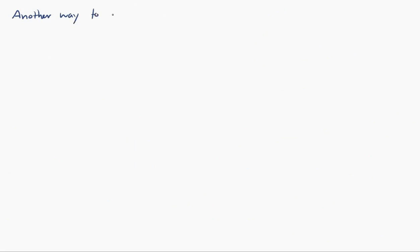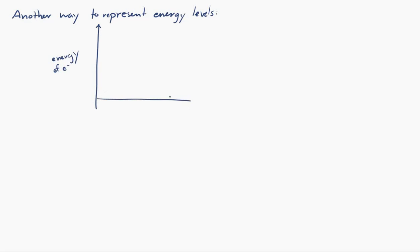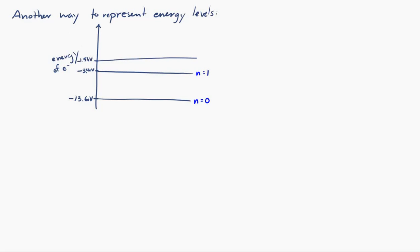There's another common way to represent these energy levels. You draw a set of axes where the vertical axis is just the energy of the electron. We have the ground state at the bottom because that's the least amount of energy, then n equals 1, n equals 2, n equals 3, and all the way up to n equals infinity when it's ionized. This is a common way to represent the energy levels.